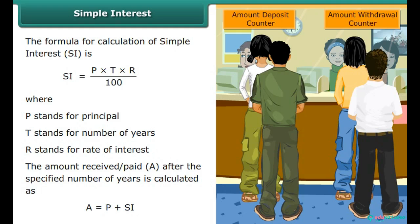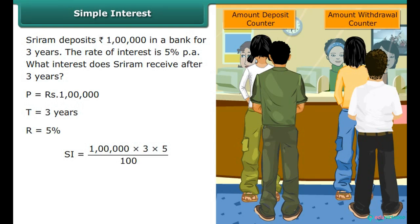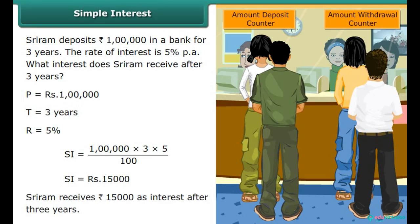Sriram deposits rupees 1 lakh in a bank for 3 years at a rate of interest of 5% per annum. What interest does Sriram receive after 3 years? Principal is rupees 1 lakh, time period is 3 years, rate of interest is 5%. By substituting in the formula: SI equals 1 lakh into 3 into 5, whole upon 100, which equals rupees 15,000. Sriram receives rupees 15,000 as interest after 3 years.